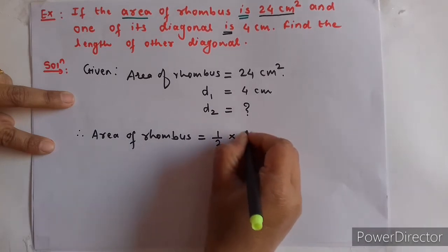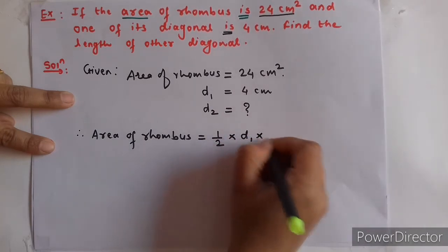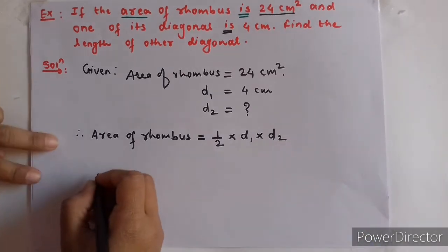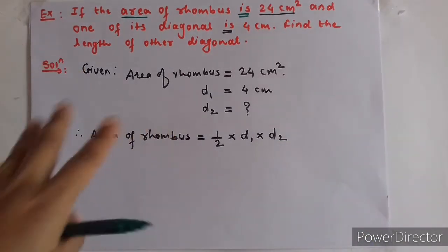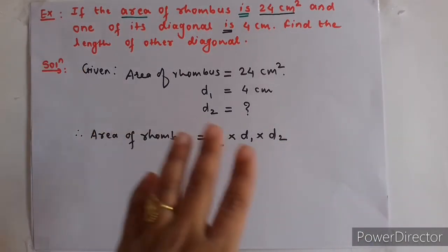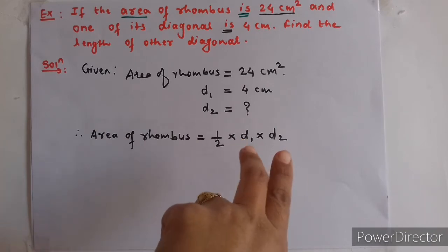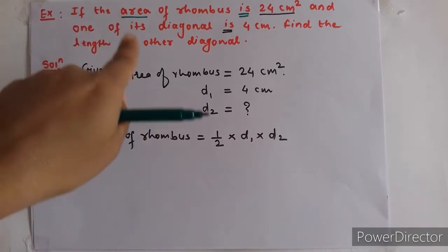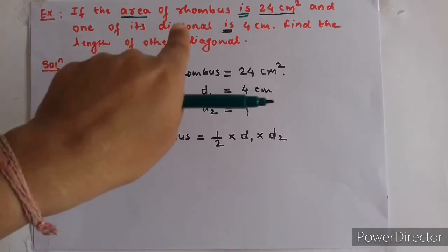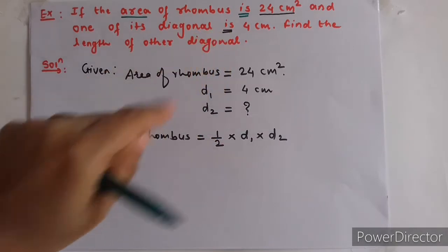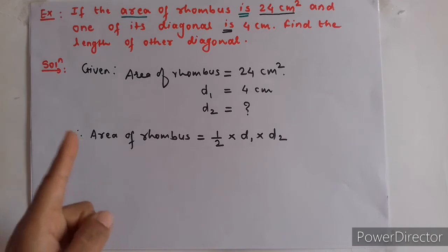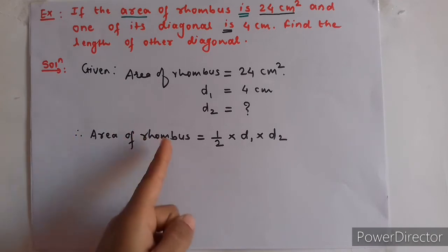Now, applying the formula: area = half into D1 into D2. In the previous example, both diagonals were given and we found the area. But here, the area is given on the left-hand side. Area of rhombus is given as 24 cm².